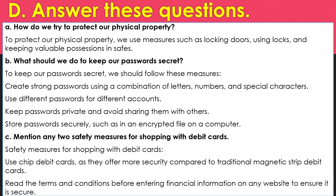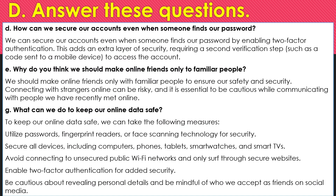C. Mention any two safety measures for shopping with debit cards. Safety measures for shopping with debit cards: Use chip debit cards, as they offer more security compared to traditional magnetic strip debit cards. Read the terms and conditions before entering financial information on any website to ensure it is secure. D. How can we secure our accounts even when someone finds our password? We can secure our accounts by enabling two-factor authentication. This adds an extra layer of security, requiring a second verification step, such as a code sent to a mobile device, to access the account.